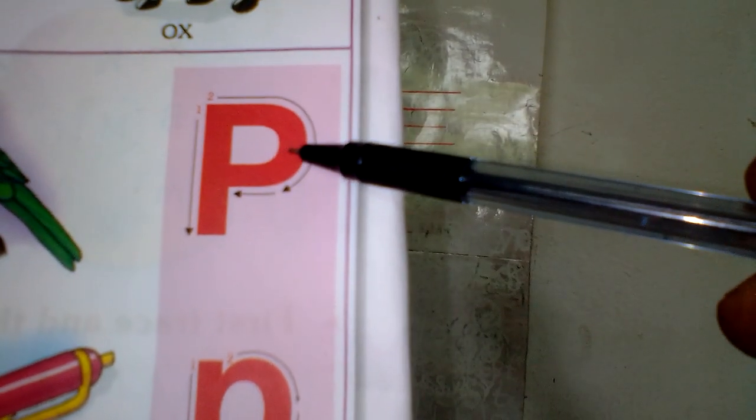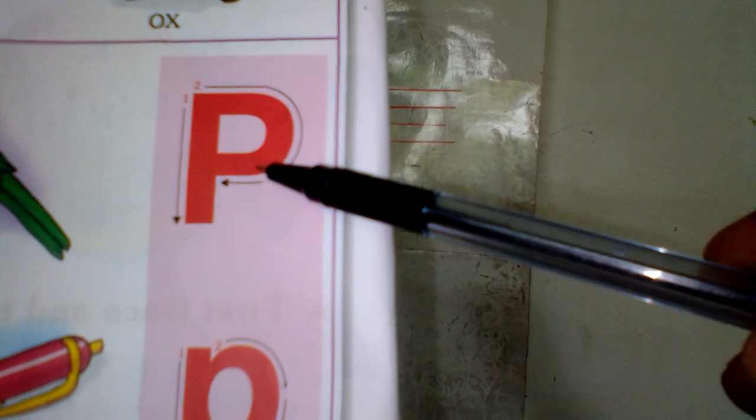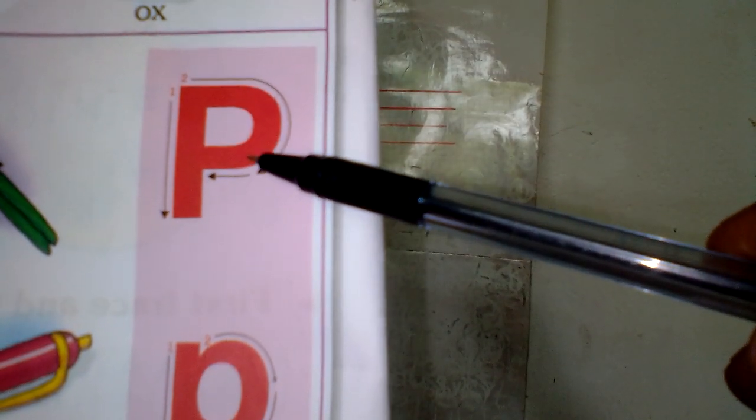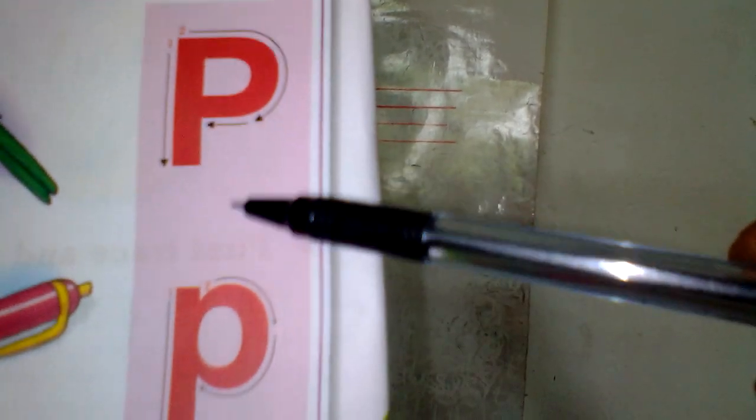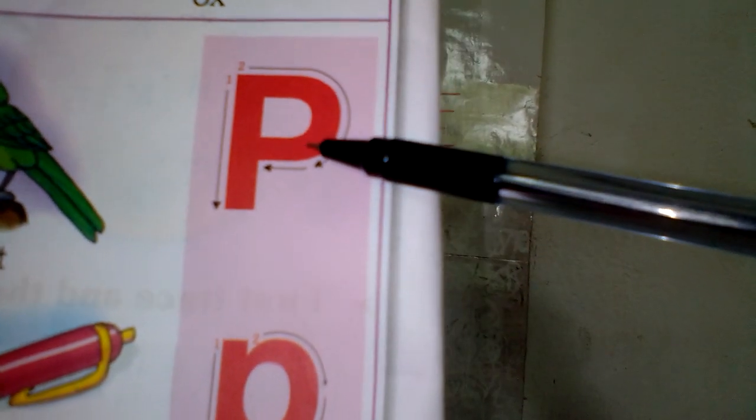What is the sound of P? P is the sound of P. Which letter? P. Capital P. Small P. What is the sound of P? P.